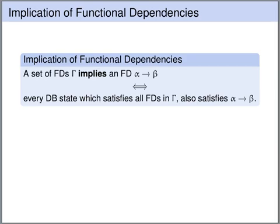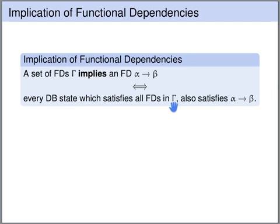The formal definition of implication of functional dependencies is as follows. We say that a set gamma of functional dependencies implies a functional dependency alpha uniquely determines beta — where alpha and beta can be sets of attributes — if and only if every database state that satisfies all of the functional dependencies in gamma also satisfies alpha uniquely determines beta. Whenever gamma is satisfied, alpha uniquely determines beta is also satisfied, and we say that gamma implies alpha uniquely determines beta.